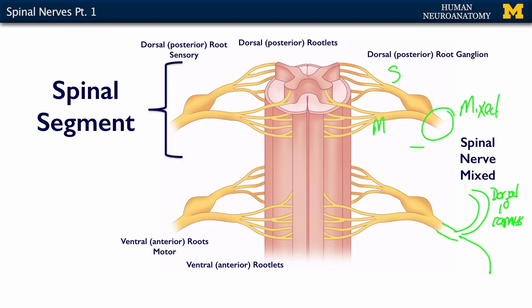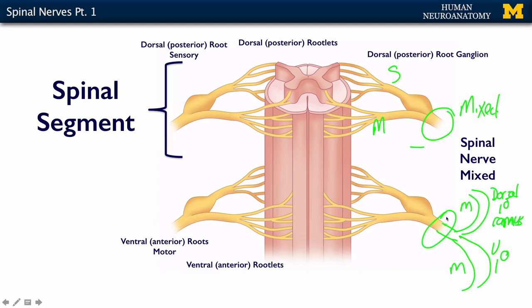The ventral primary ramus is going to curve around the front and innervate your sides and the anterior or ventral part of your body. Both of these are mixed, because they are branches of that mixed spinal nerve — so the dorsal primary ramus is mixed and the ventral primary ramus is mixed.